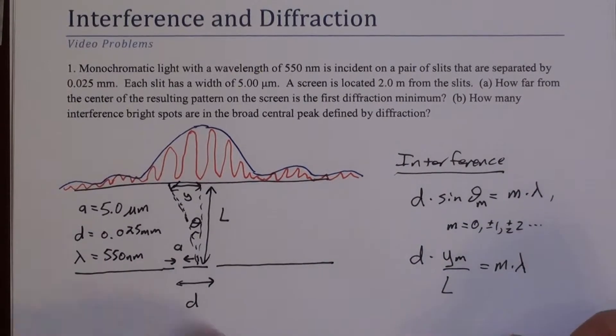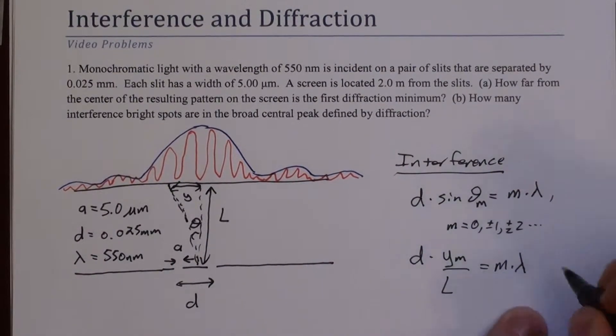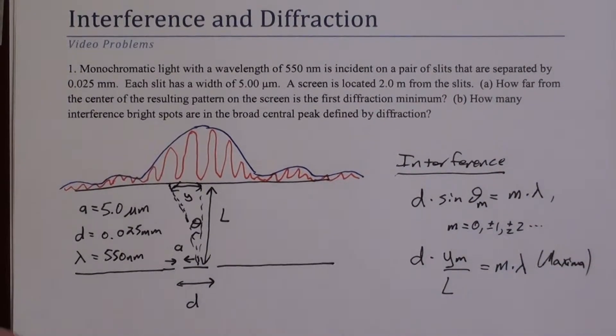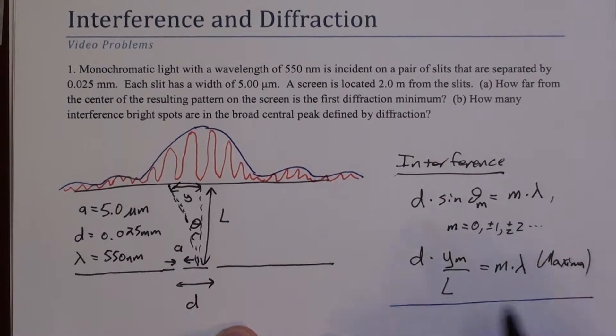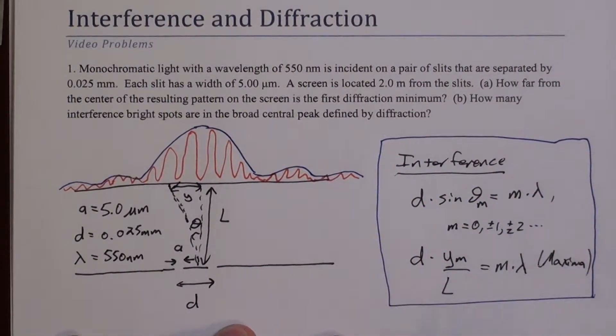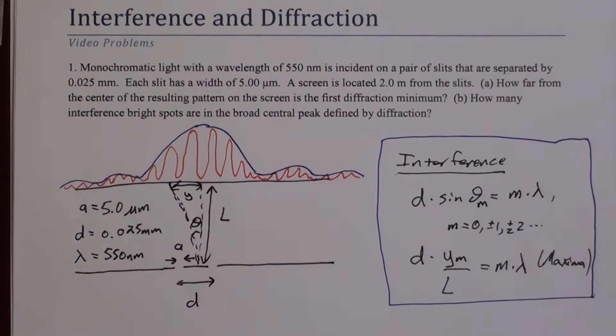So that describes the interference. I should mention though, that these are the maxima, meaning these are to the peaks of these bright spots. So let's put a box around that.